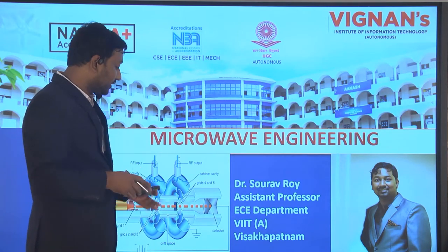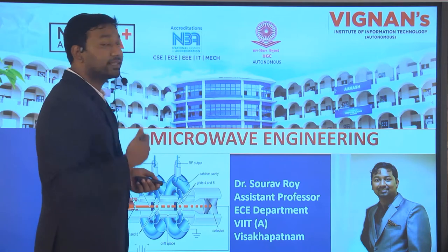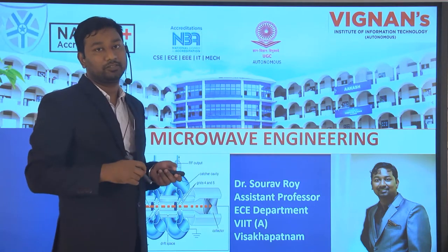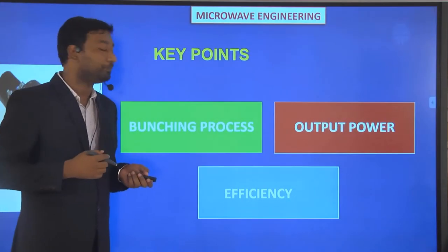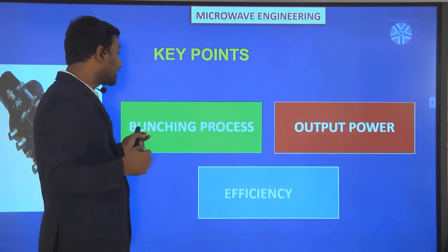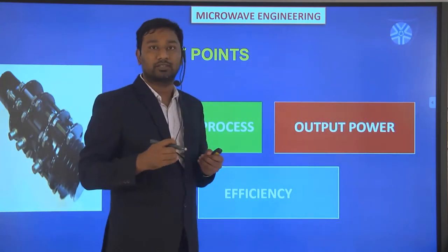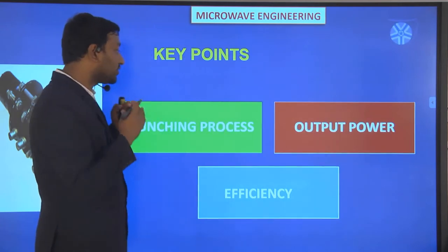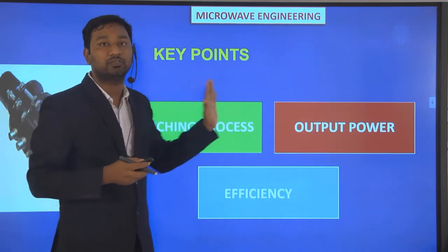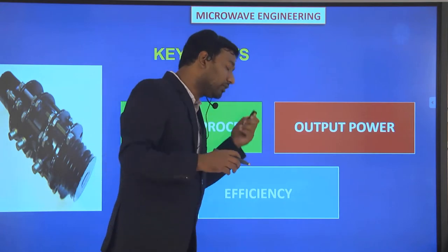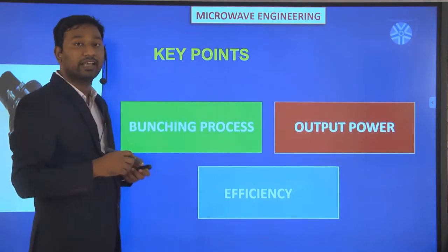In the last lecture, we discussed how velocity modulation takes place. Now we will see the effects of velocity modulation in this lecture and how the applicate diagram comes. The effect of velocity modulation is called the bunching process, where electron beams are bunched together and move from the bunching cavity to the catcher cavity. Then we will calculate its output power as well as its efficiency.